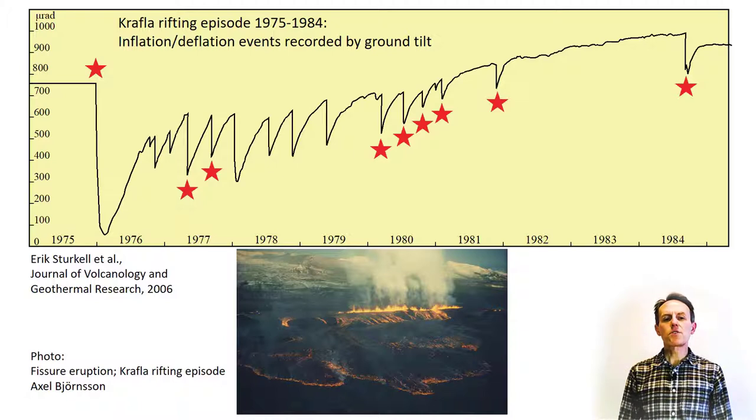In these non-eruptive deflation events, magma flowed into the fissure swarm of Krabla, forming dykes without eruptive activity on the surface.